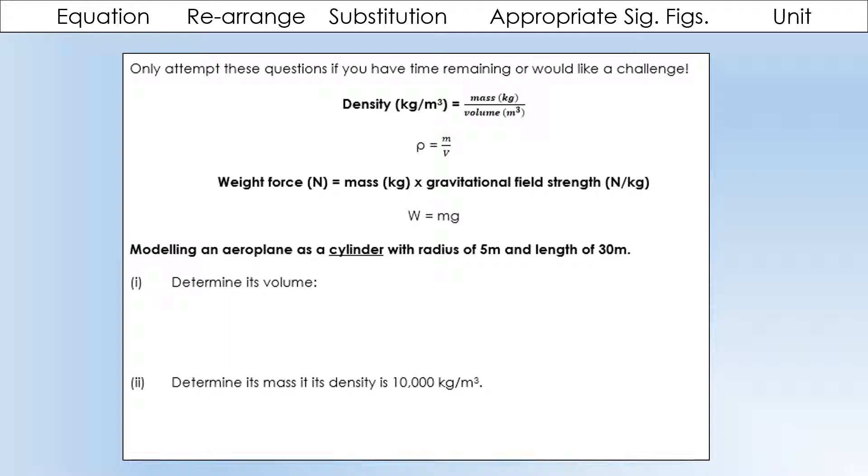So, modelling an aeroplane as a cylinder with radius of 5m and length of 30m, determine its volume. So, a cylinder looks like this. And we calculate the volume of a cylinder by finding the area of the cross section, using pi r squared, and multiplying it by the height or the length. So, we can plug our numbers in, and we can get ourselves a volume to two significant figures. And our volume will be measured in metres cubed, because our radius and our length were in metres.